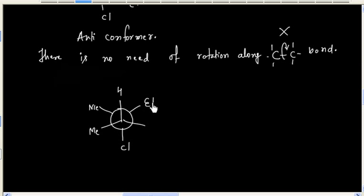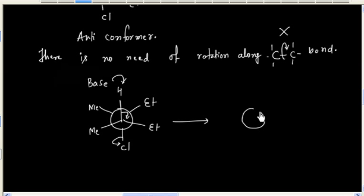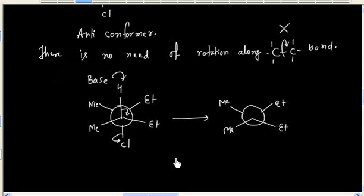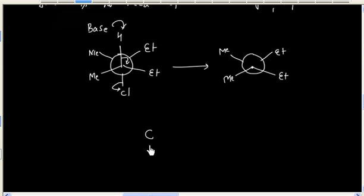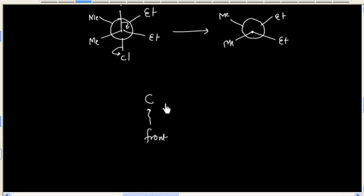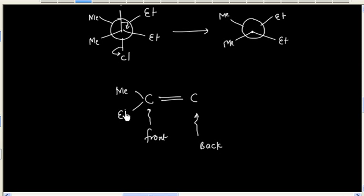We have methyl on the left side and ethyl on the right side. The base will abstract this hydrogen, and we will have carbon-carbon double bond formation. Finally we will have this product. The front carbon and back carbon are connected by a double bond, and the front carbon has methyl and ethyl groups. This is the double bond.